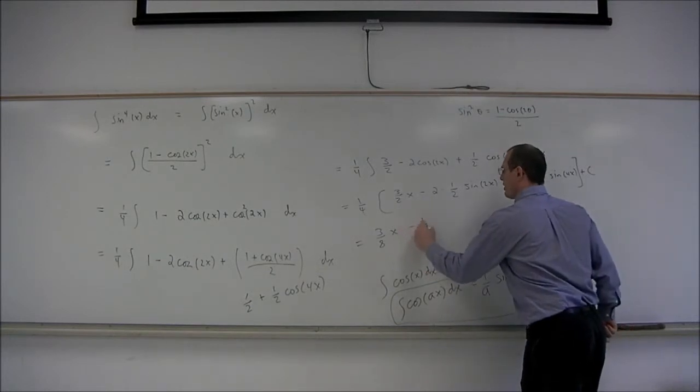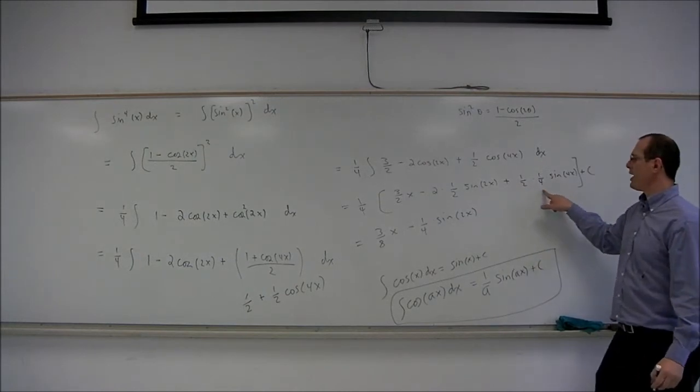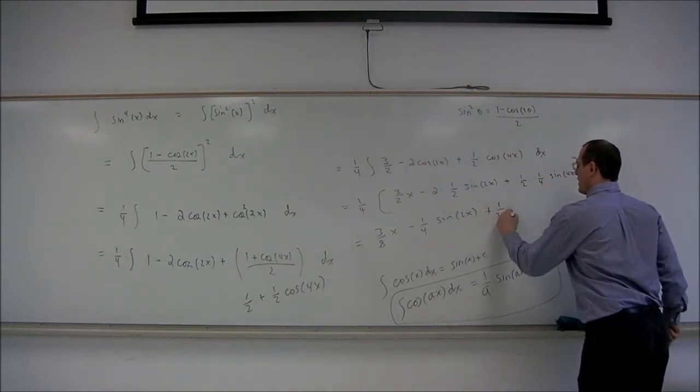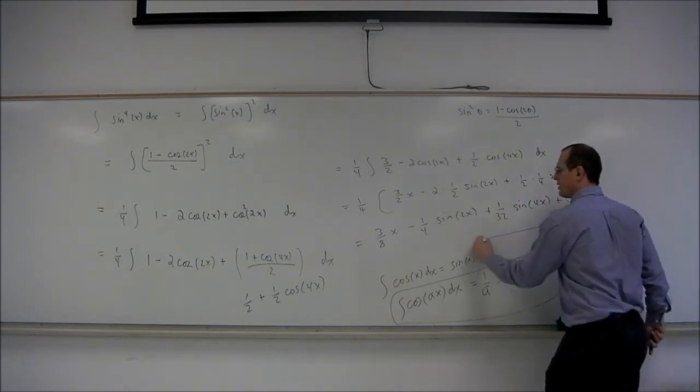So make it minus 1 fourth sine 2x. And here, that's 1 eighth times 1 fourth is plus 1 thirty-second sine of 4x plus c.